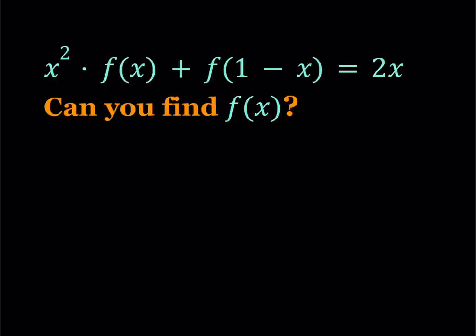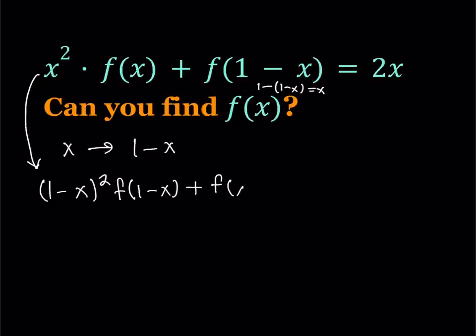In this equation notice that we have f twice, but with different arguments. So I'd like to replace x with 1 minus x, and that gives me 1 minus x quantity squared multiplied by f of 1 minus x plus f of, notice that if I do it here, I get 1 minus 1 minus x, which is equal to x. So this gives me f of x.